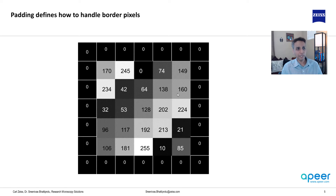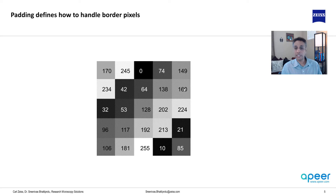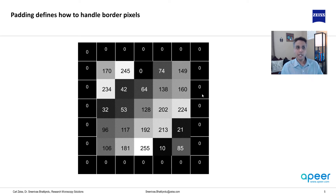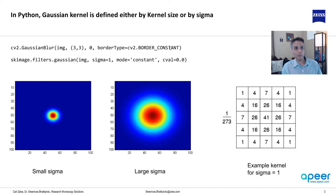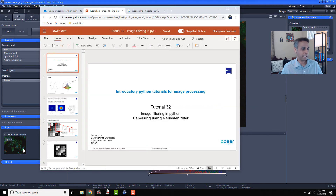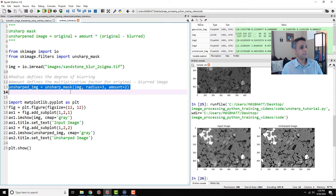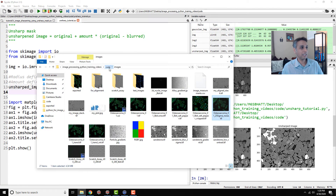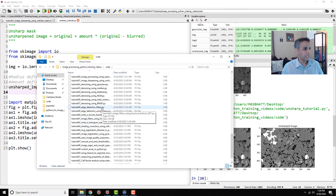At the border, when the central pixel is at the edge and there are no neighboring pixels on one side, you need a strategy. One approach is padding: adding new pixels with a value of zero — called constant border mode. Another way is to copy the nearest edge pixel value. In OpenCV this is set with cv2.BORDER_CONSTANT and a value of zero.